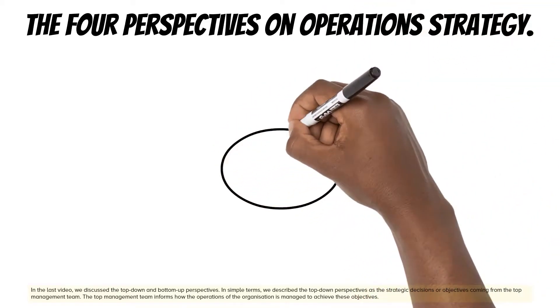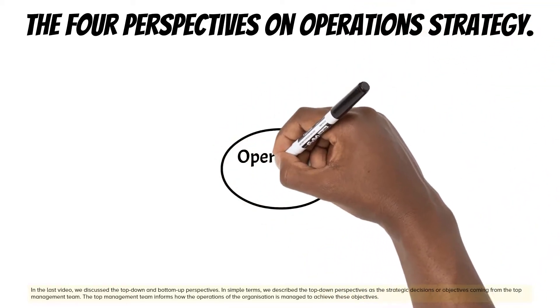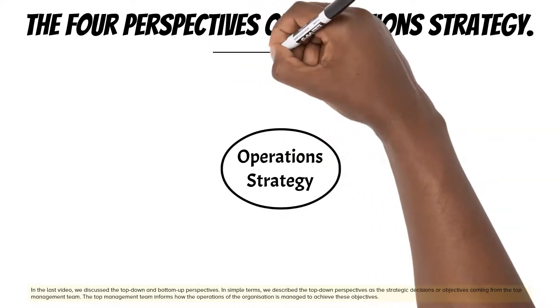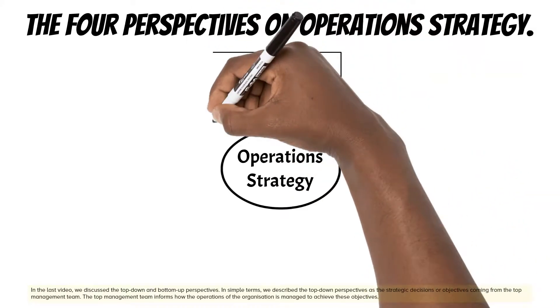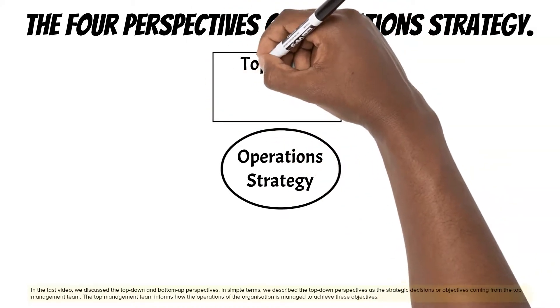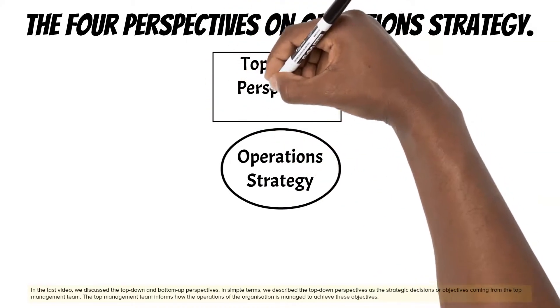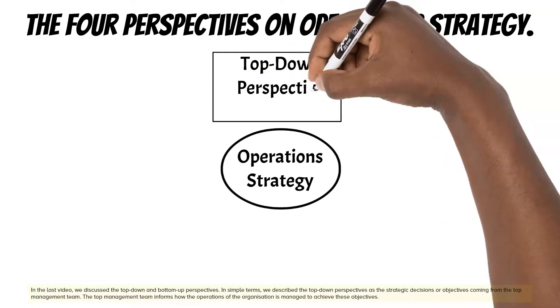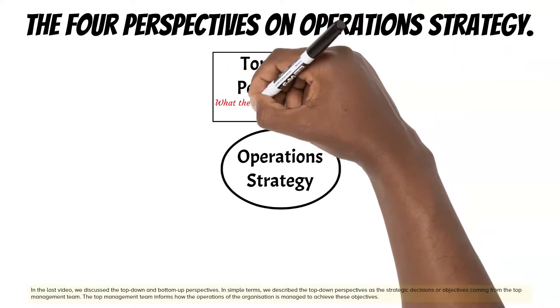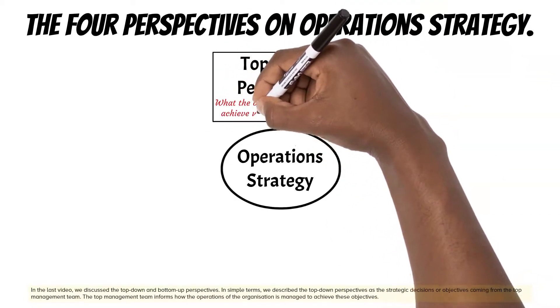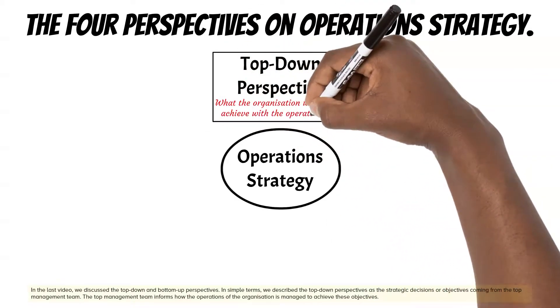In simple terms, we described the top-down perspective as the strategic decisions or objectives coming from the top management team. The top management team informs how the operations of the organization is managed to achieve these objectives.